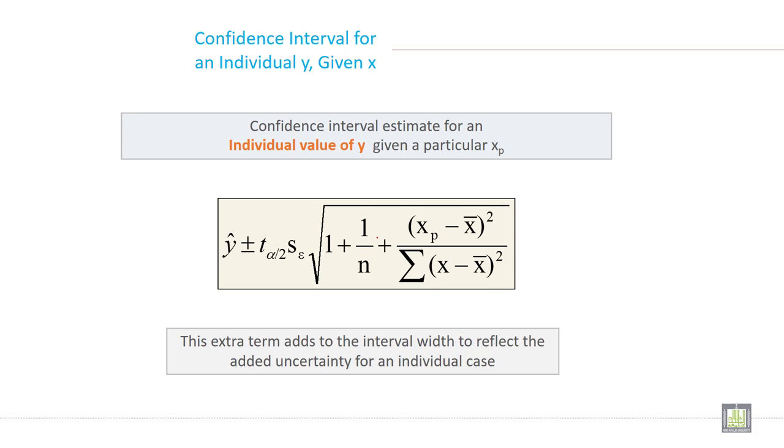Confidence interval estimate for an individual value of y given a particular value of x. This formula includes an extra term added to the interval width to reflect the added uncertainty for an individual case.